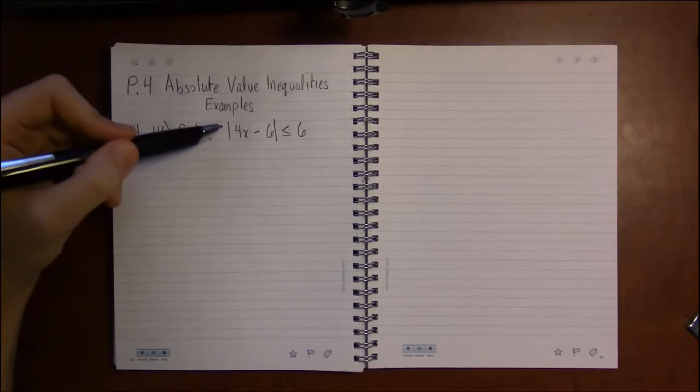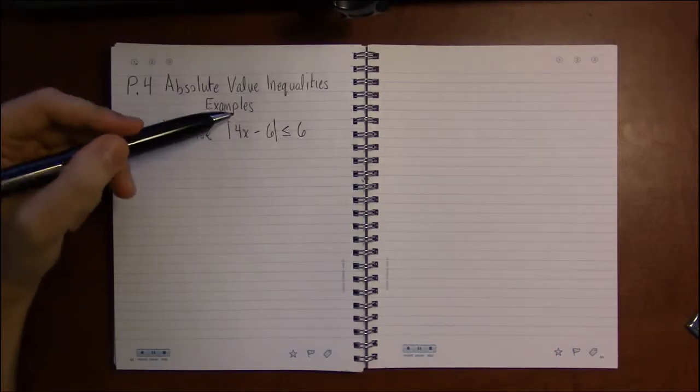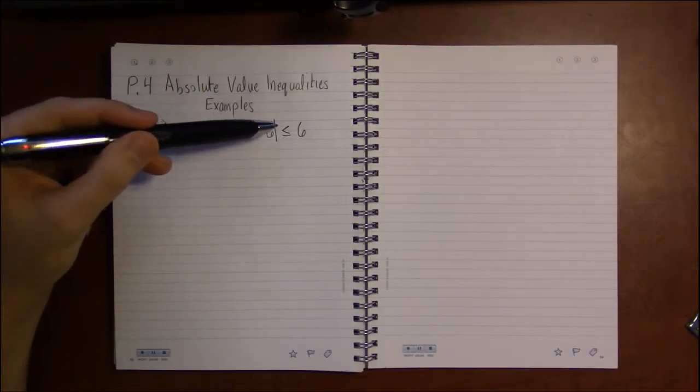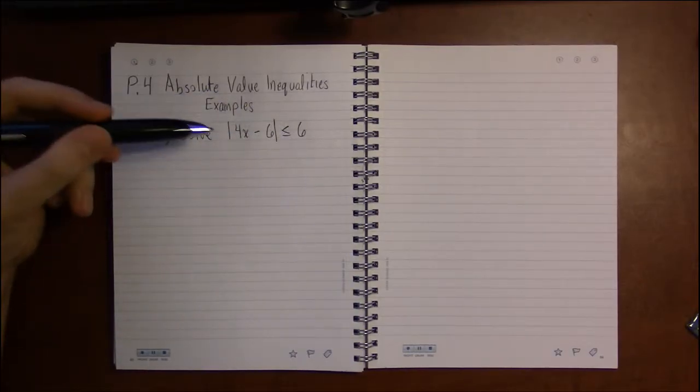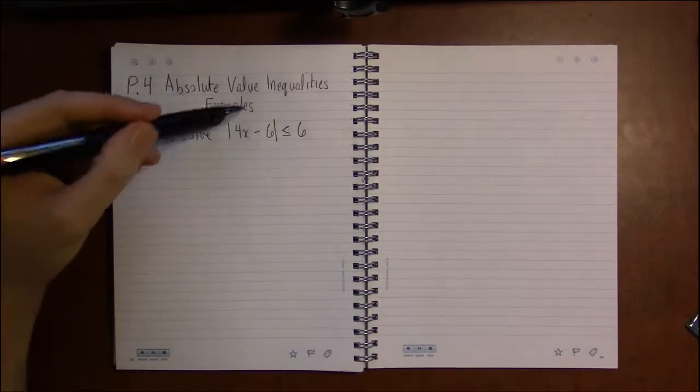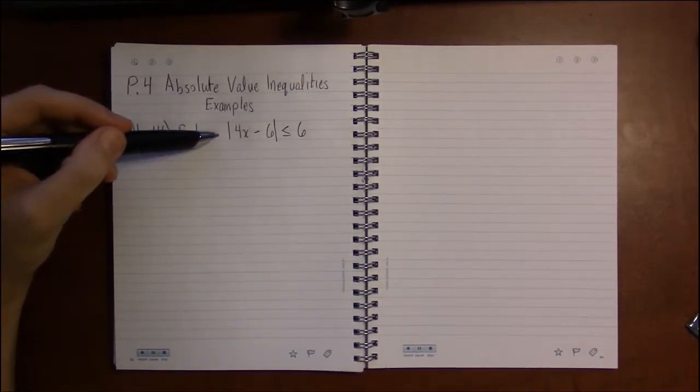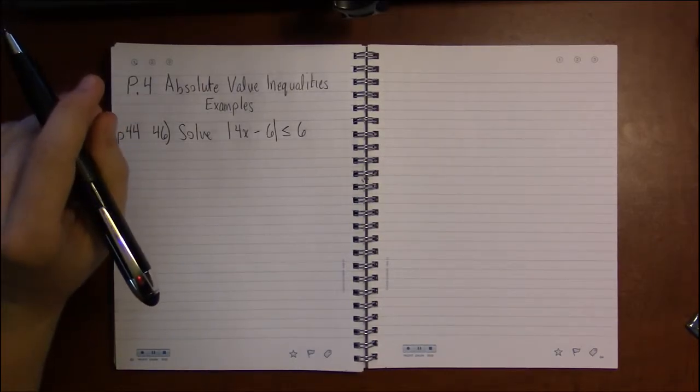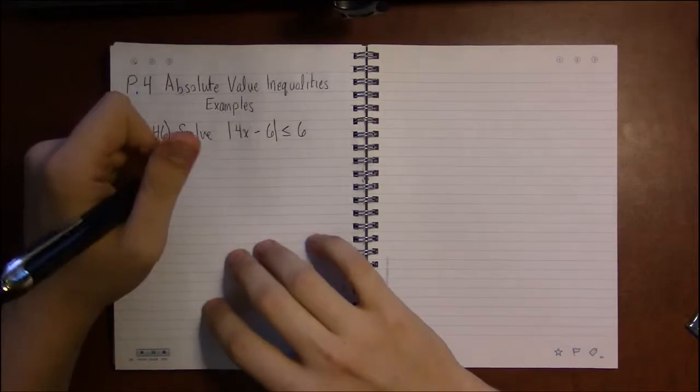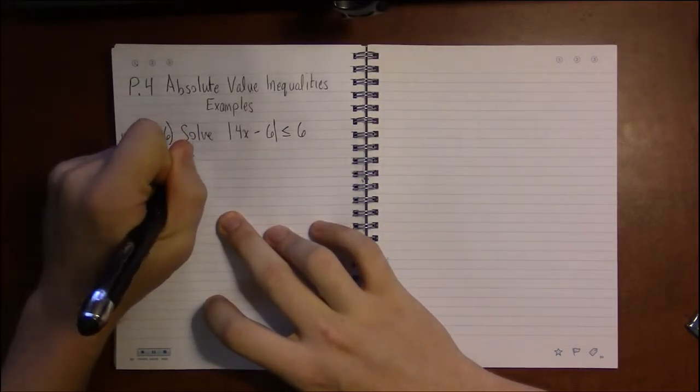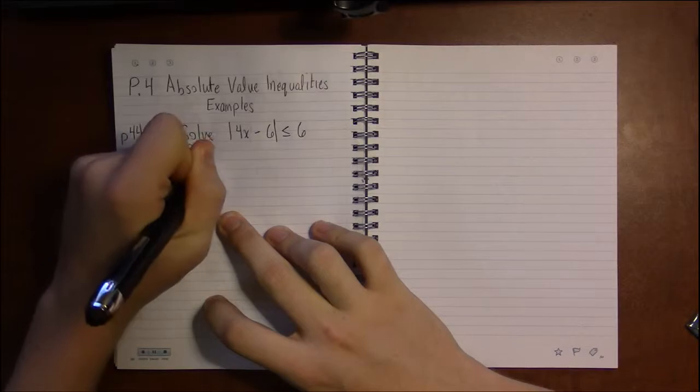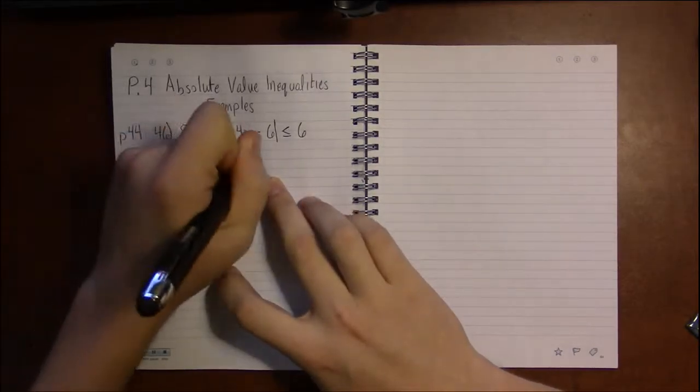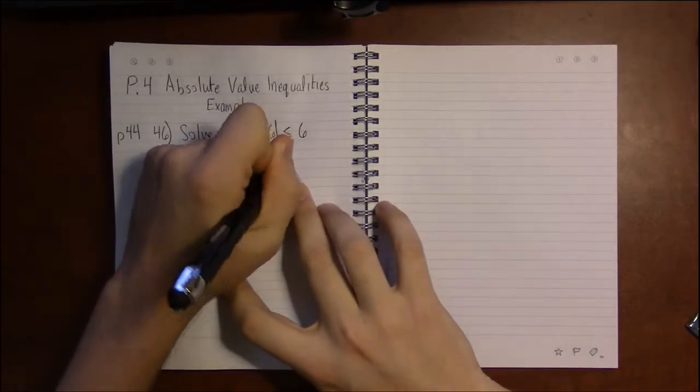In this case, we've got the absolute value of 4x minus 6, and this is supposed to be less than or equal to 6, and we're supposed to find the values of x that make this statement true. If we're following our pattern that we established in the last video, the first step is to isolate the absolute value, which is already done.